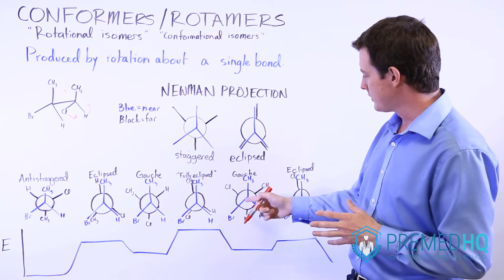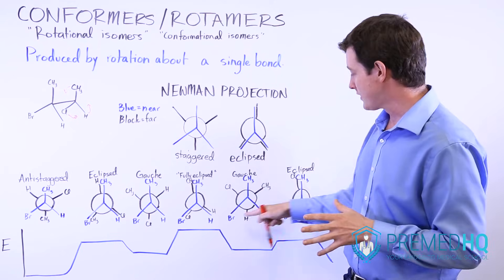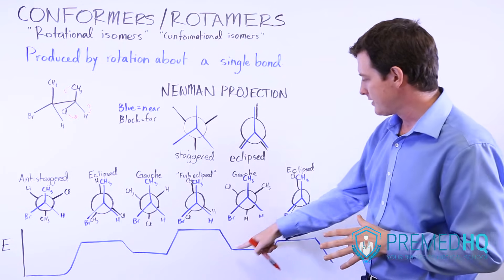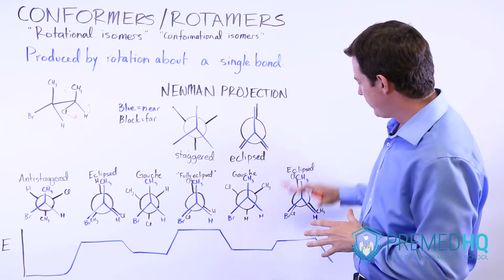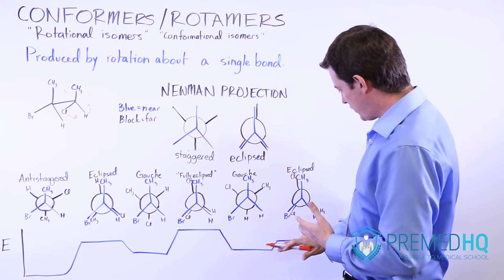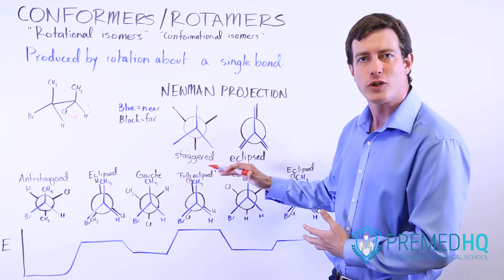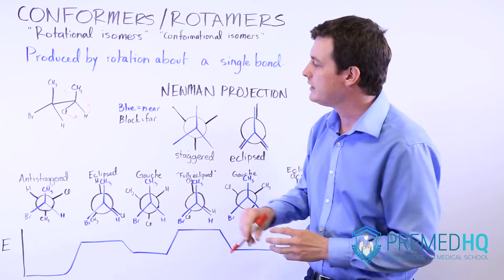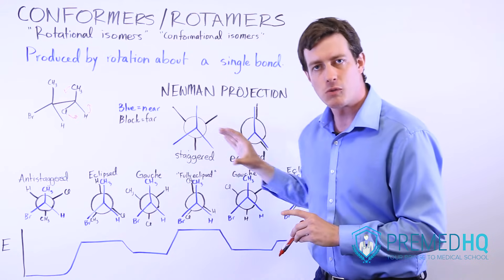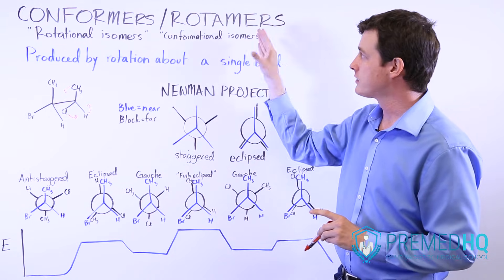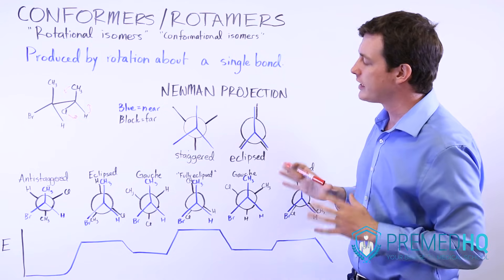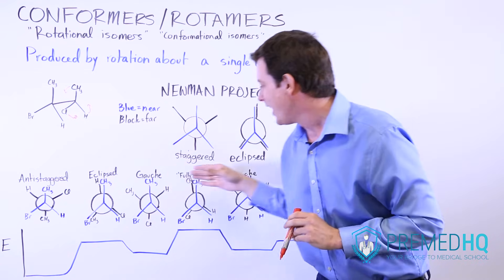As we rotate further we again get another gauche conformation where it's staggered, but the CH3 groups aren't ideally far from each other — again a fairly low energy. Then we come to an eclipsed but not fully eclipsed position where the CH3 groups aren't eclipsing each other, so it's slightly higher energy but not as high as the fully eclipsed conformation. Now we've completed a full rotation of this carbon's groups relative to that carbon's groups. The big categories are staggered versus eclipsed, and the two special extremes are anti-staggered and fully eclipsed.